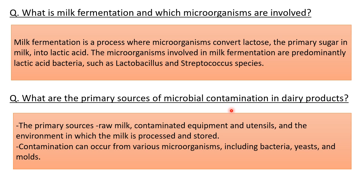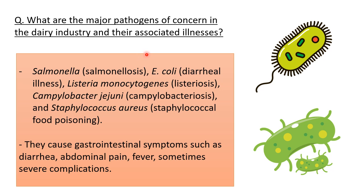What are the primary sources of microbial contamination in dairy products? The primary sources include raw milk — even the animal, the person milking the animal, and their hands if not clean can be sources of contamination. Vessels used for collecting raw milk, contaminated equipment used for storage, utensils, and the environment in which milk is processed and stored are also sources. Contamination can occur from bacteria, yeasts, and molds.